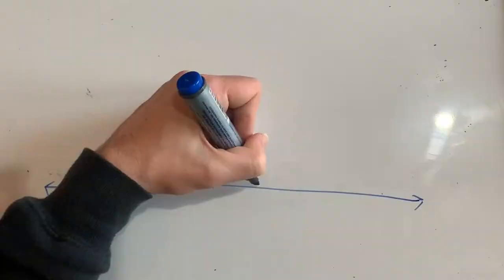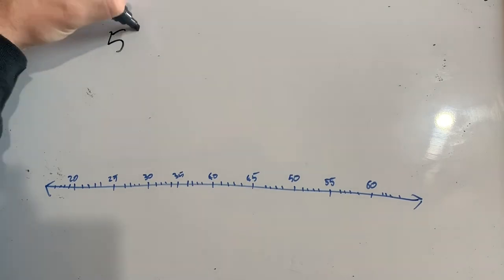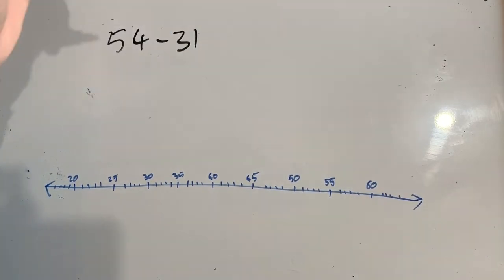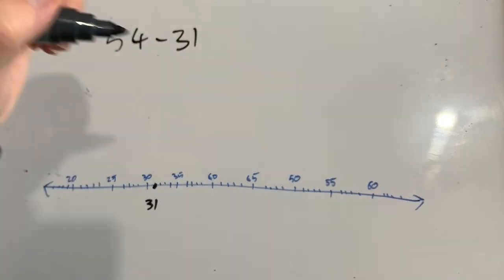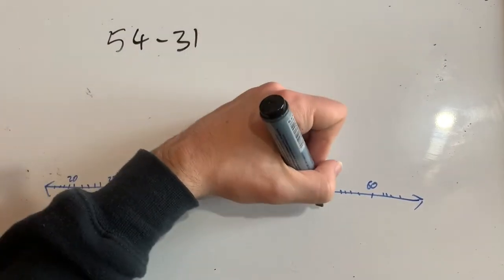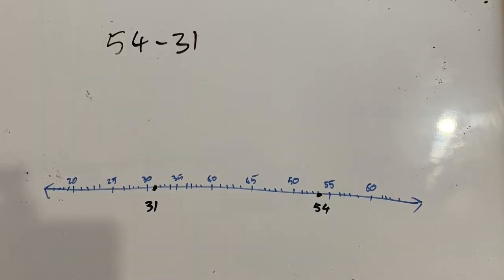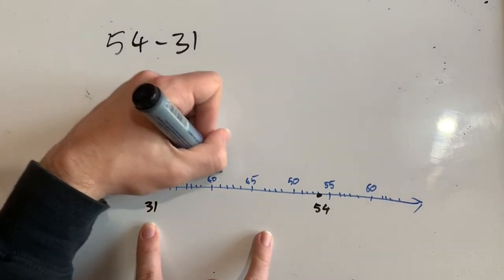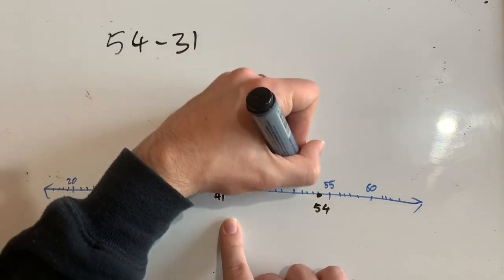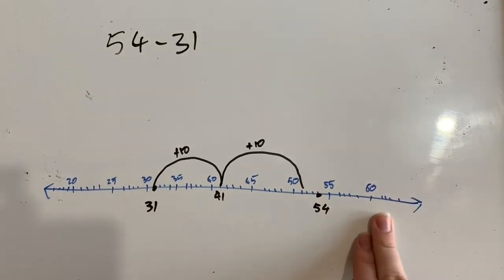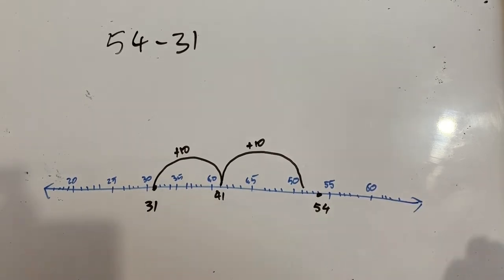Let's do one more. This time, 54 minus 31. I'm going to start on 31 and I need to end up on 54. I want to know how far I have to jump to get there. Let's start by jumping 10 at a time: from 31 to 41, then another jump to 51. I can't jump another 10 because that would land me at 61, which is too big. So it's going to be easier to just add smaller amounts.